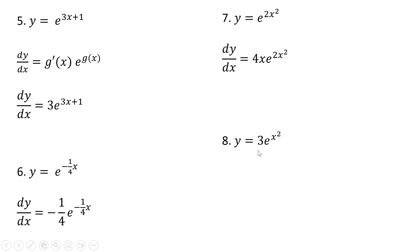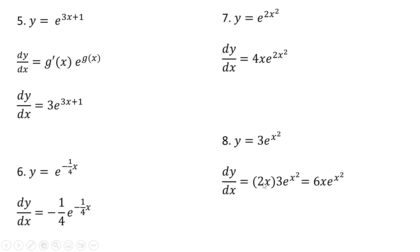Example 8: y equals 3e raised to the x squared power. The derivative of x squared is 2x. Bring that down in front, and then we can take this 2x and multiply it by 3 to get 6x, all multiplied by the original function.